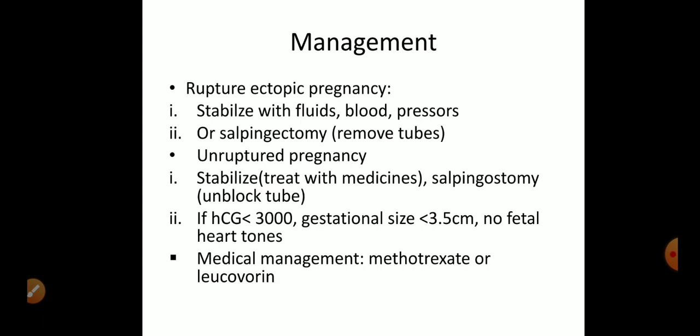If HCG — human chorionic gonadotrophin hormone — is less than 3,000 and the gestational sac size is less than 3 cm, then medical management is used. The drugs used are Methotrexate and Leucovorin. This concludes the overview of ectopic pregnancy management.